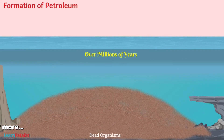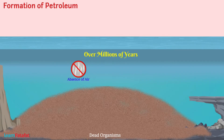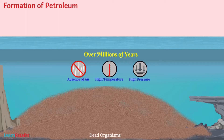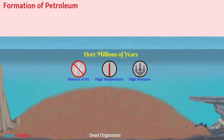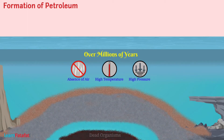Over millions of years, in conditions such as absence of air, high temperature and pressure, these dead parts went through a series of processes and got converted to petroleum and natural gas.